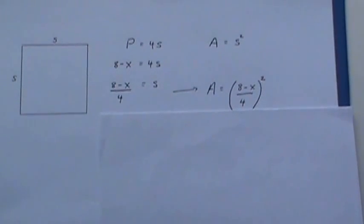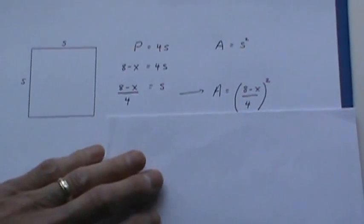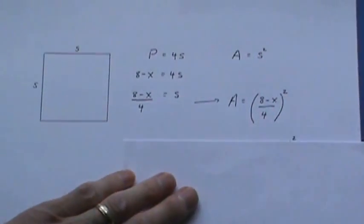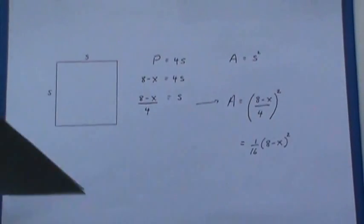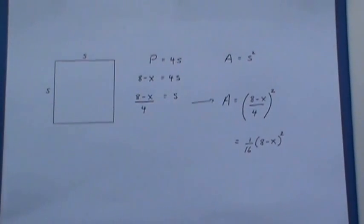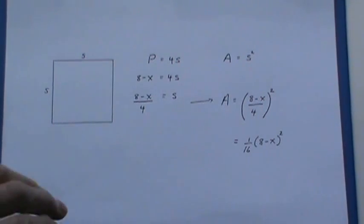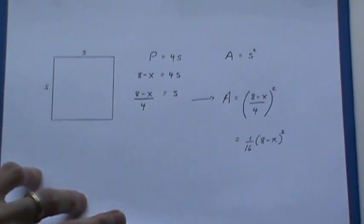Once again I want to make sure that I've got something that's easy to work with so I squared the 4 on the bottom and I just removed that I've got a 1 over 16 out in front again hoping to make the derivative as simple as possible.